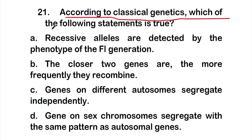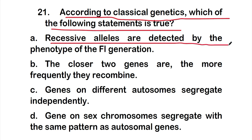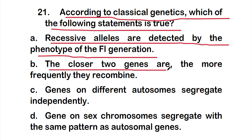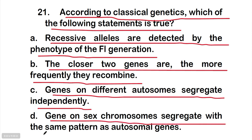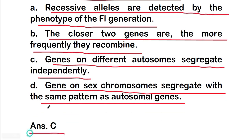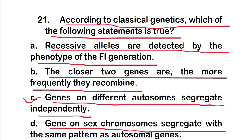Option A: recessive alleles are detected by the phenotypes of the F1 generation. Option B: the closer two genes are, the more frequently they recombine. Option C: genes on different autosomes segregate independently. Option D: genes on sex chromosomes segregate with the same pattern as autosomal genes. The right answer is option C — genes on different autosomes segregate independently.